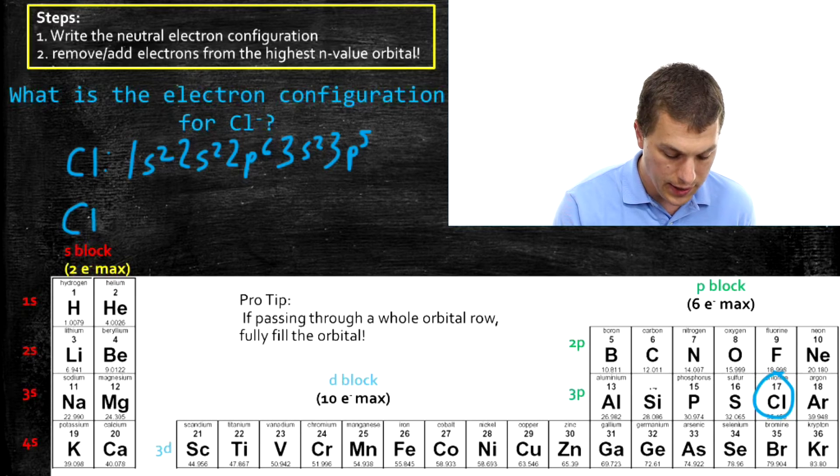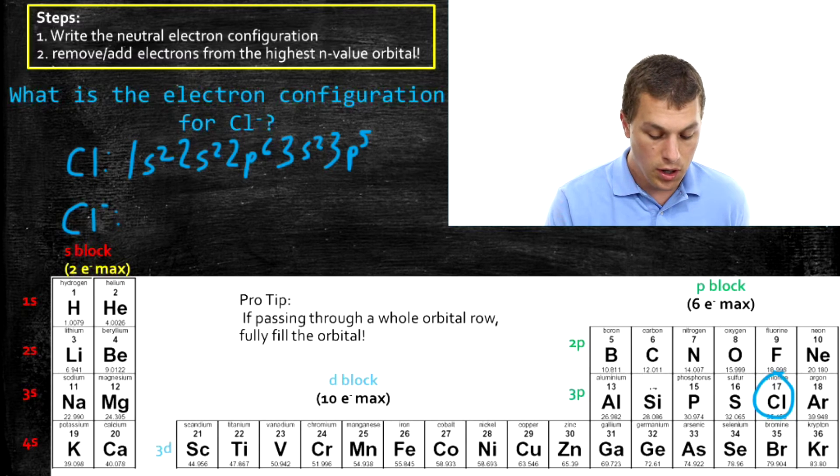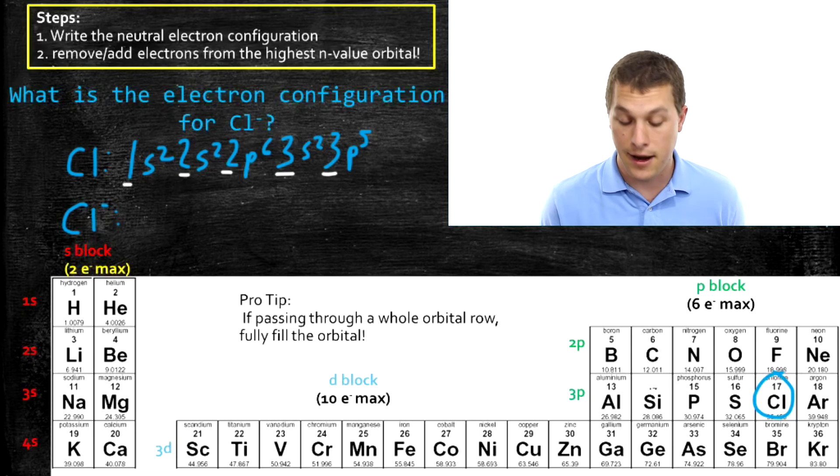So Cl minus is just going to have one extra electron in the highest n value orbital. Which one's the highest n value orbital? Well, here's 1, 2, 2, 3, and a 3. So that 3P is where we're going to add it.